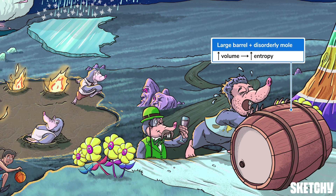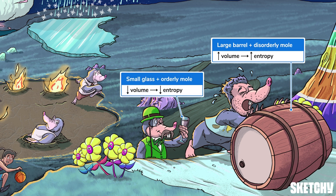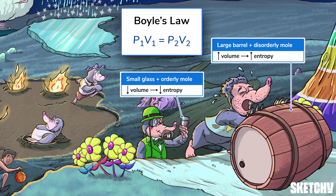Notice how the disorderly entropic mole has a large volume of wine in that barrel, while his orderly sommelier counterpart has a low-volume glass. Knowing that volume and entropy are directly related means we can also figure out how pressure influences entropy. According to Boyle's law, volume and pressure are inversely related — so when pressure decreases, entropy increases.